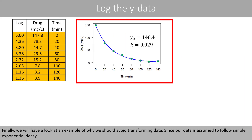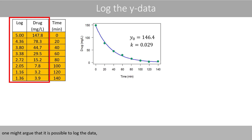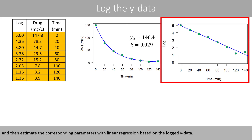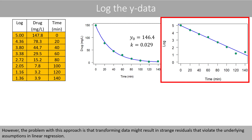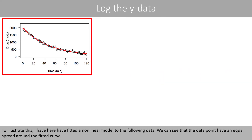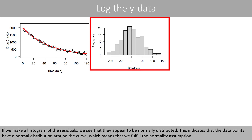Finally, we look at an example of why we should avoid transforming the data. Since the data is assumed to follow simple exponential decay, one might argue that logging the data and then estimating parameters with linear regression on the logged data is possible. However, transforming data might result in strange residuals that violate the underlying assumptions of linear regression. To illustrate this, a nonlinear model has been fitted to example data, and we can see that the data points have an equal spread around the fitted curve. A histogram of the residuals shows they appear to be normally distributed, indicating that the normality assumption is fulfilled.